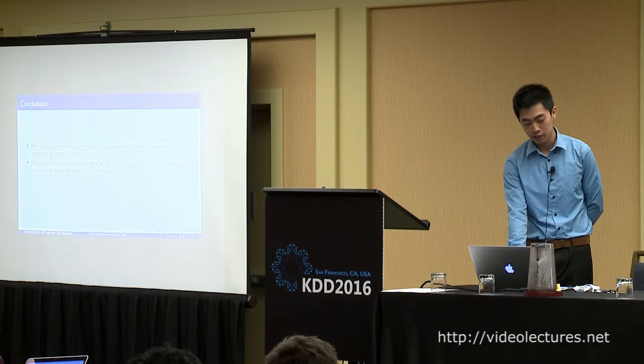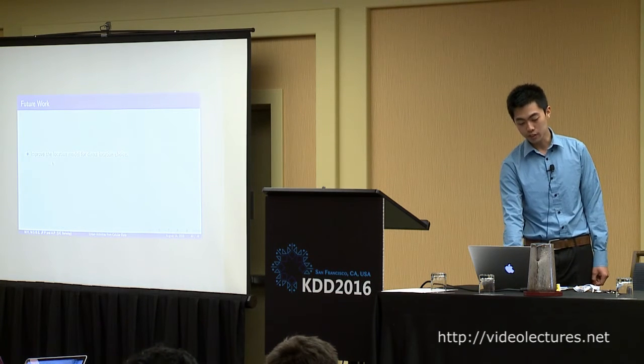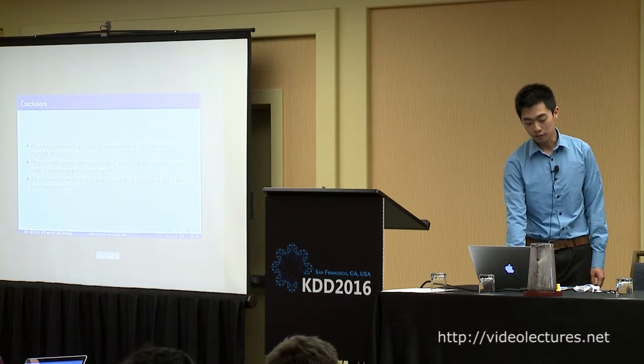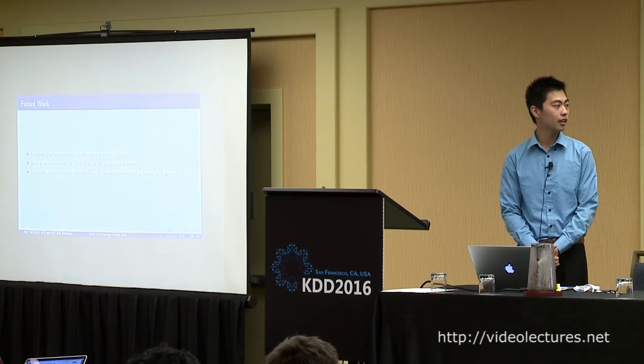To conclude, we used an unsupervised generative state space model to infer primary and secondary activities from cellular data. We analyzed the spatial-temporal profile of activities as well as the heterogeneous transition probabilities given different contexts. The generative nature of the model gives us direct access to inputs needed for activity-based travel demand modeling. For future work, we can improve the location model to directly sample locations, gain a small amount of labeled data for validation, and start simulating activities using the model to compare resulting traffic with ground truth. Thank you very much.